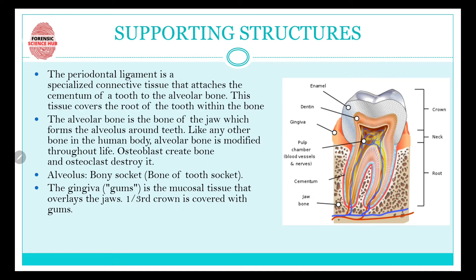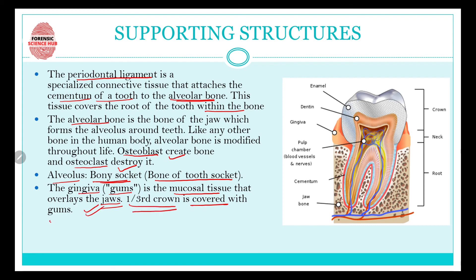There are also supporting structures. The periodontal ligament is a specialized connective tissue responsible for attaching the cementum of the tooth to the alveolar bone or jawbone; it covers the root within the bone. The alveolar bone is the jawbone that forms the alveolus around the teeth — it is modified throughout life, formed by osteoblast cells and destroyed by osteoclast cells. The alveolus is also known as the bony socket. The gingiva, or gum, is the mucosal tissue overlaying the jaws — the pinkish-reddish portion visible to the eye — and it covers one third of the crown.